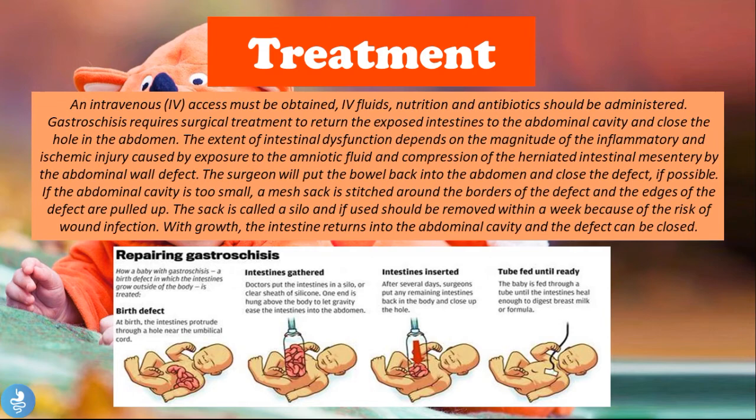The surgeon will put the bowel back into the abdomen and close the defect if possible. If the abdominal cavity is too small, a mesh sac called a silo is stitched around the borders of the defect and the edges are pulled up. The silo should be removed within a week because of the risk of wound infection. As the child grows, the intestines return into the abdominal cavity and the defect can be closed.